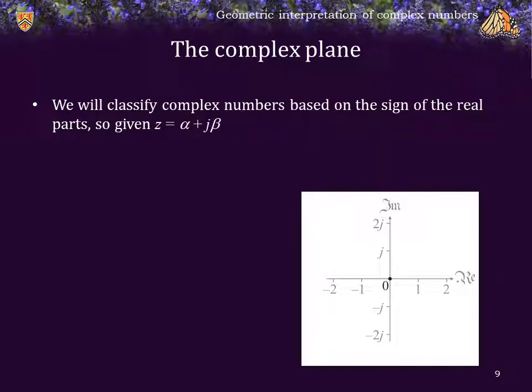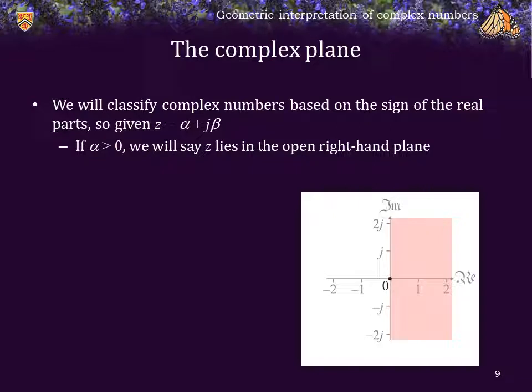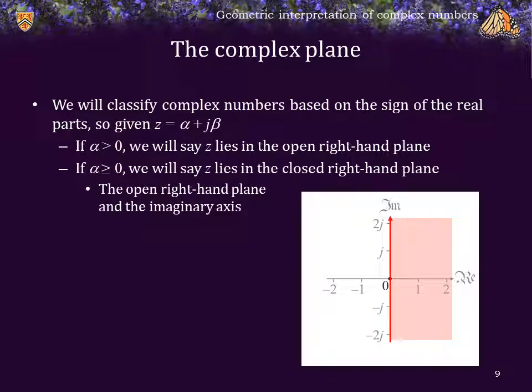Now, we're going to also classify complex numbers based on the sign of the real part. So, given the complex number z equals alpha plus j beta, if alpha is strictly greater than 0, we will say that z lies in the open right-hand plane. If alpha is greater than or equal to 0, we will say z lies in the closed right-hand plane. That is, it's the open right-hand plane together with its boundary, which is the imaginary line.